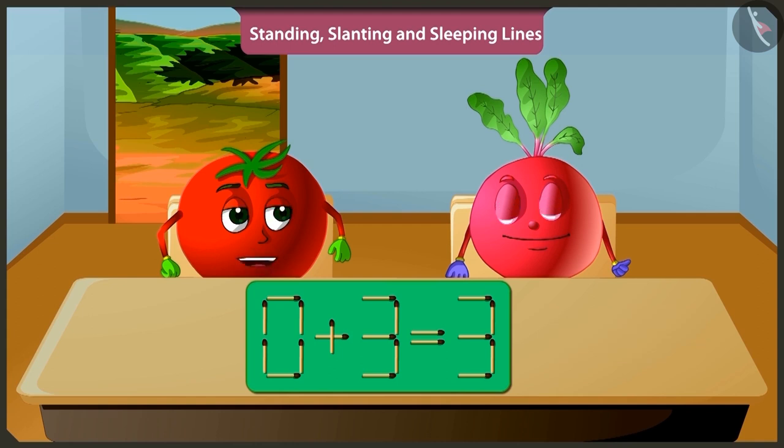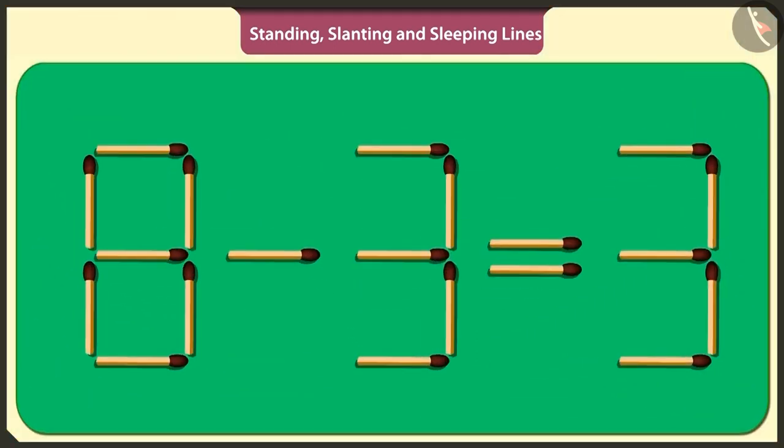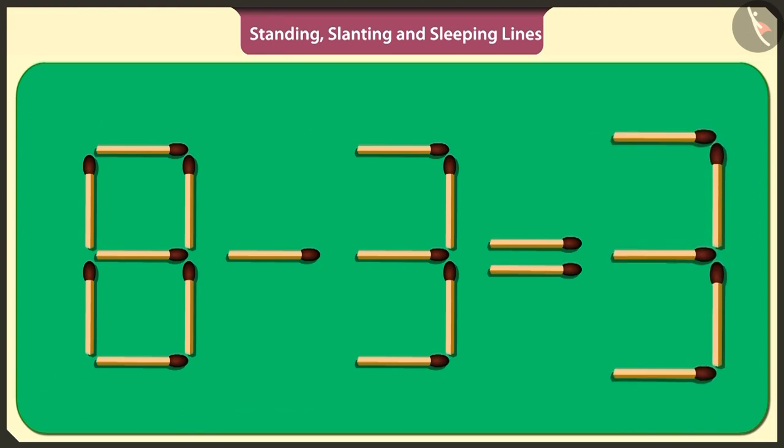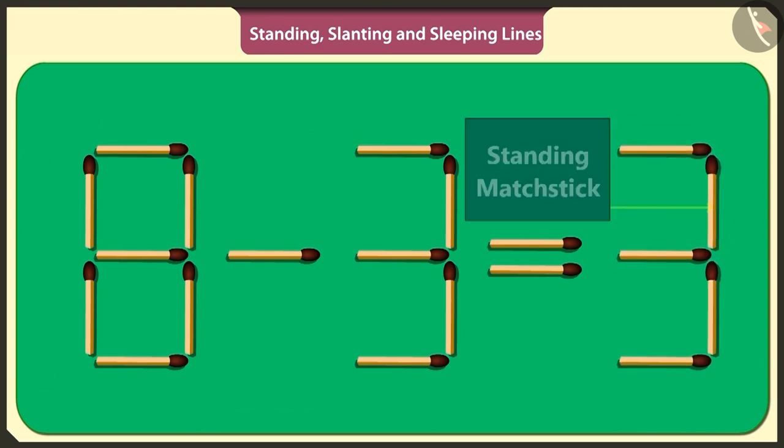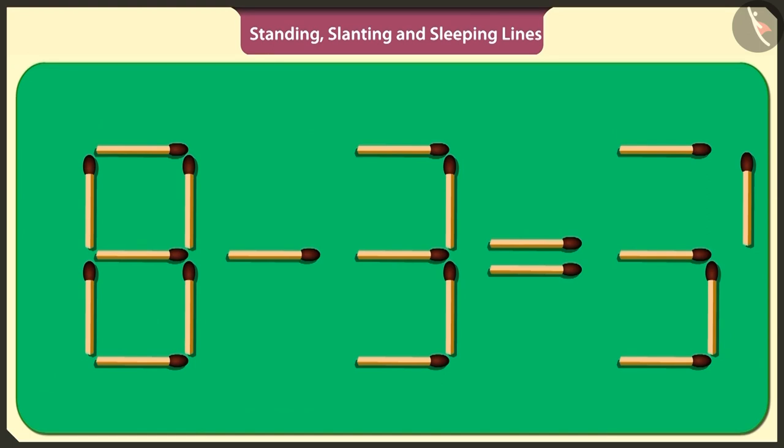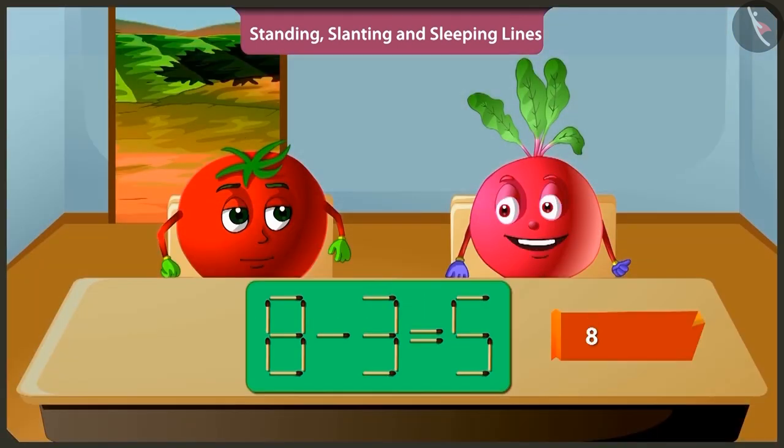Look, now I will solve the same puzzle in a different way. How is that? If from the answer of the puzzle, that is three, I remove this standing matchstick and place it this side, then also the puzzle will be solved. Oh, wow. If we subtract three from eight, then we get five.